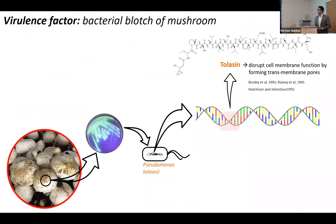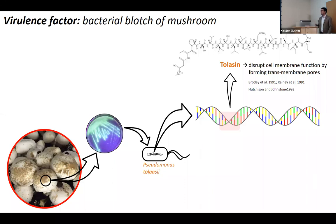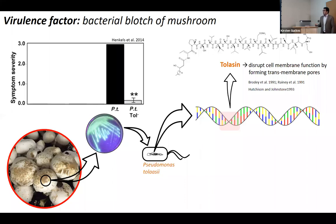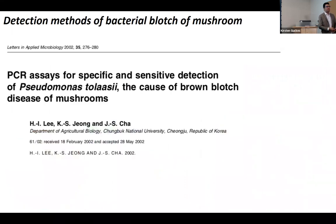The virulence factor that plays a role in blotch disease is tolasin — talking here about Pseudomonas tolasei. It causes transmembrane pores on the surface of the mushroom. Some researchers have knocked out the gene related to tolasin and saw a drastic reduction in disease severity. We can use that information — for example, to detect the pathogen by designing primers specific to amplify that region, and we already have primers designed for that.